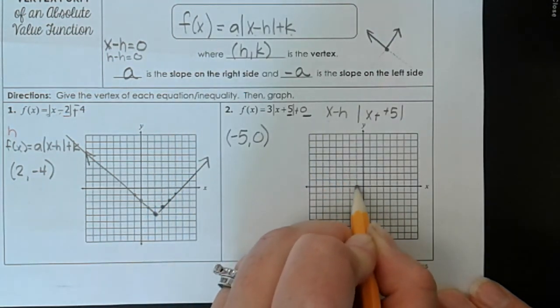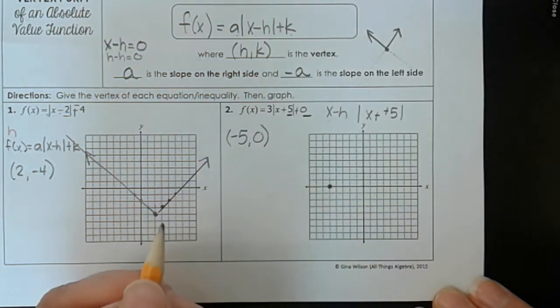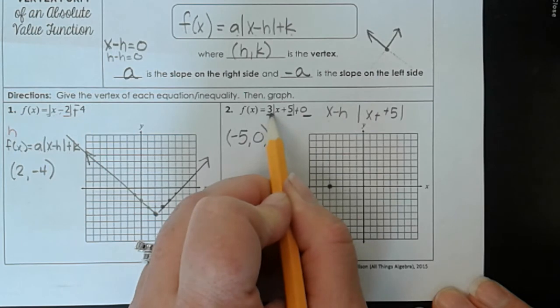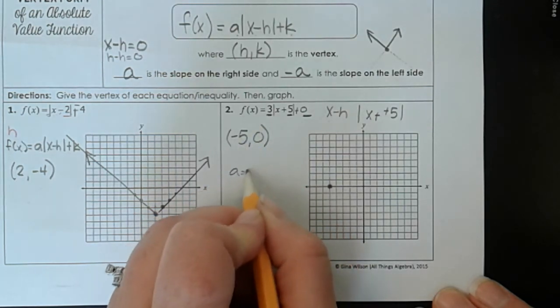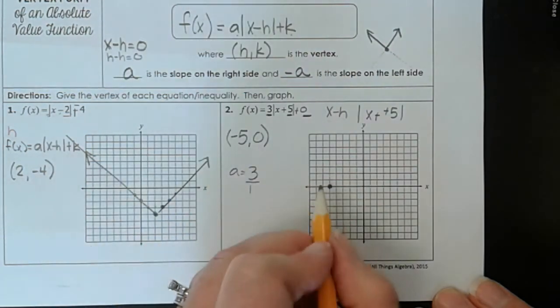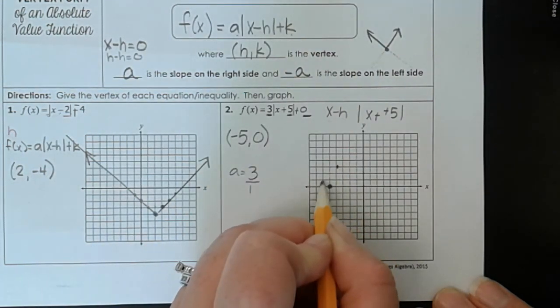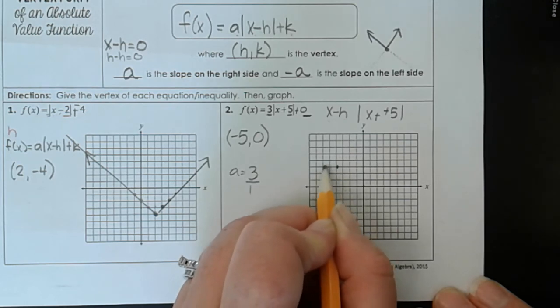We can graph this at negative 5 right here. Now we just use this a value as our slope. So a equals 3. And again, slope rise over run. So 1, 2, 3. And then we go in the negative value. 1, 2, 3.